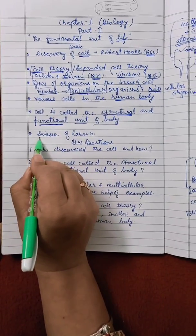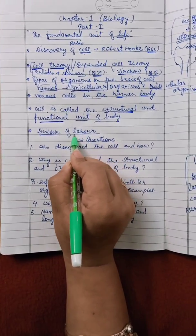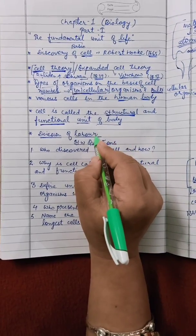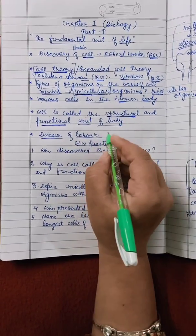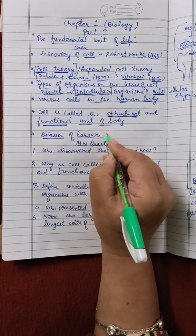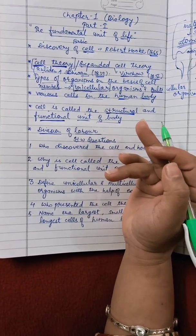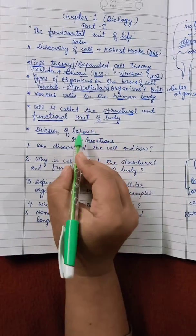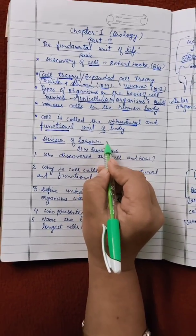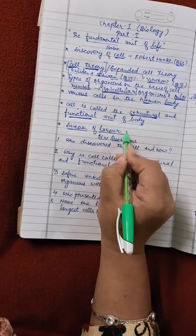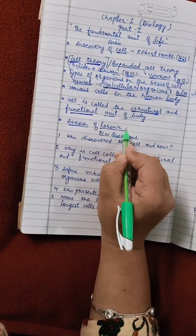Division of labor means that in multicellular organisms, different kinds of cells perform different kinds of functions. Division of labor can also be seen in unicellular organisms.